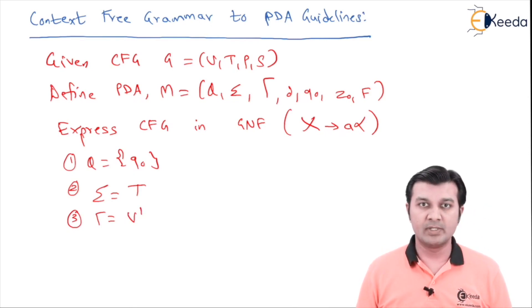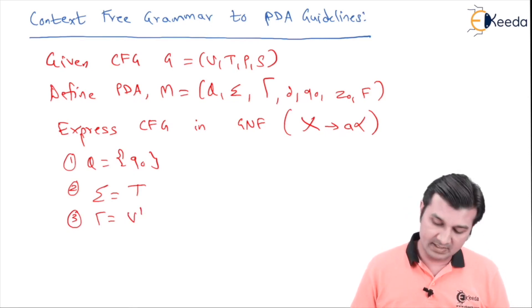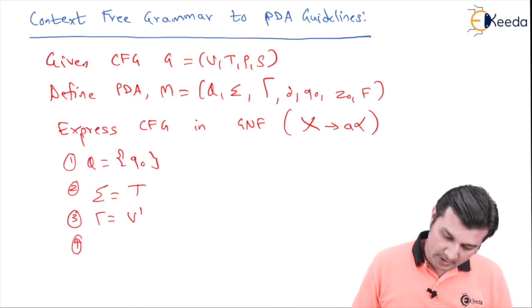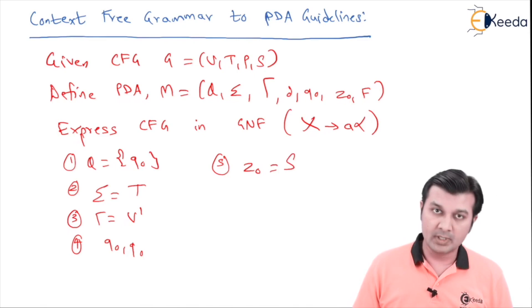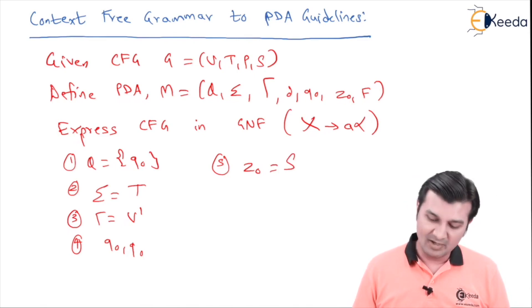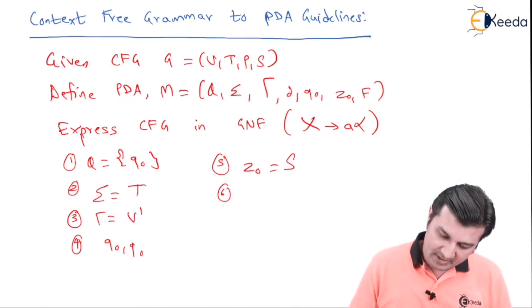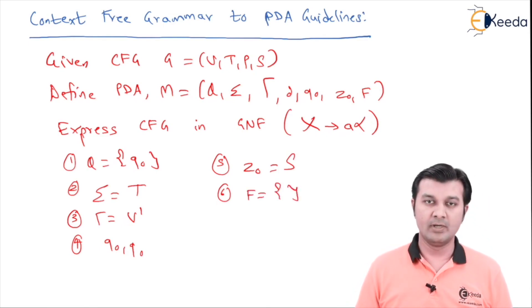Fourth one, my q0 is going to be equal to q0 again. My fifth one, z0 is going to become the start symbol of the context free grammar. Sixth one, final state is not going to be present over here. Why, that will understand when I start with the problem.